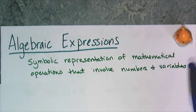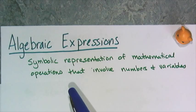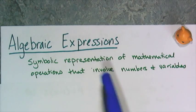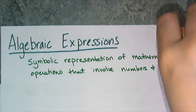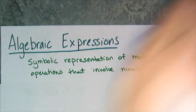First, an algebraic expression is a symbolic representation of mathematical operations that involve both numbers and variables. If I don't have variables, then it's just a numeric expression. Put an X in there and it becomes algebraic.